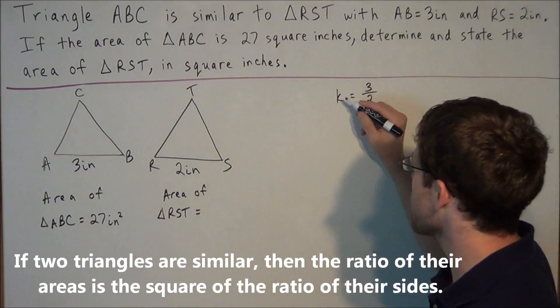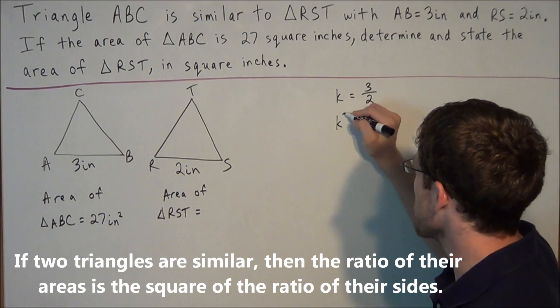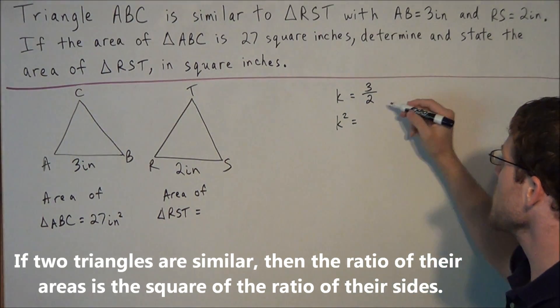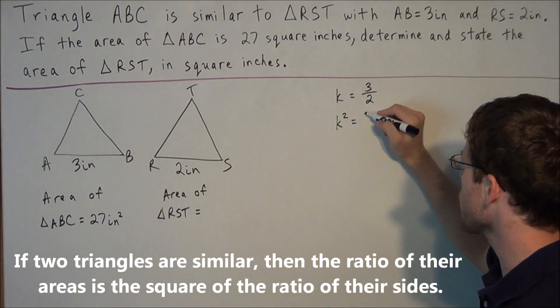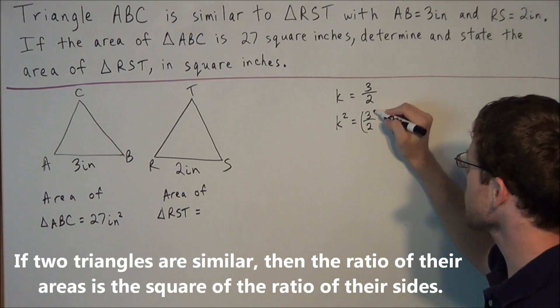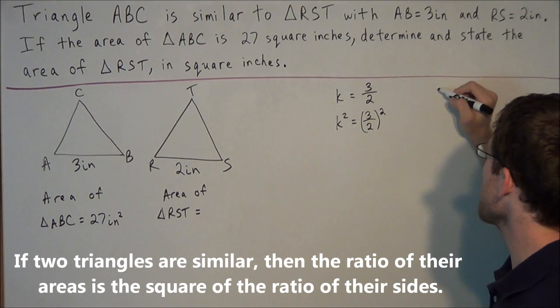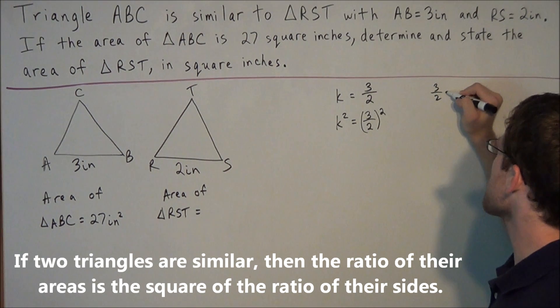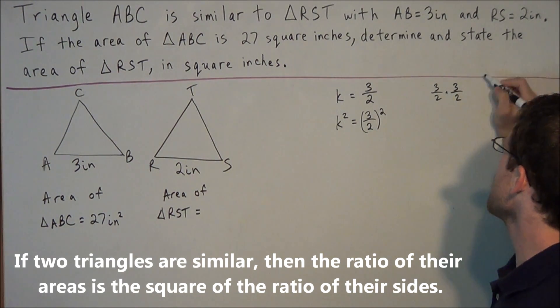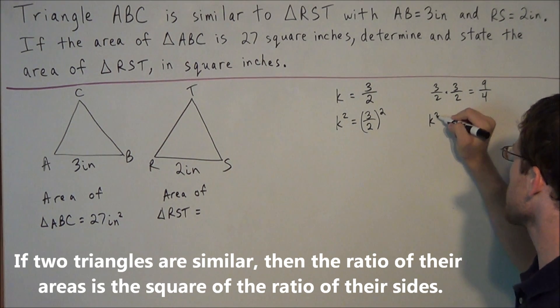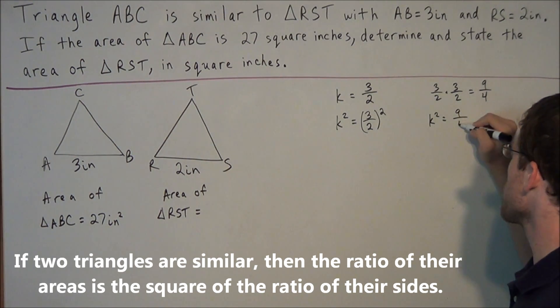But from our theorem we need to find the square of the ratio of the sides. So we're taking 3 over 2 and we're going to square it. And if we multiply 3 over 2 times 3 over 2, this is equal to 9 over 4. So k squared is equal to 9 over 4.